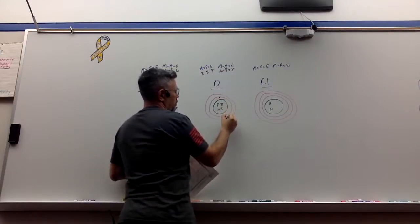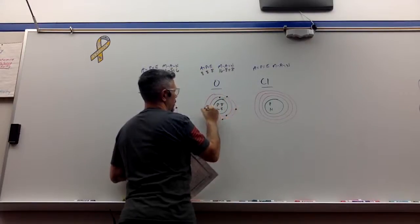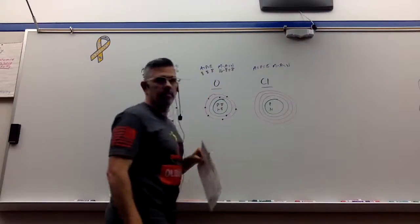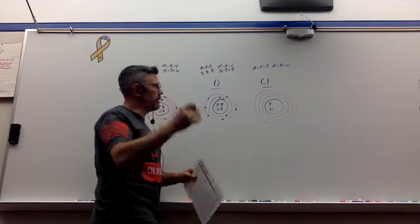Now I need to put eight electrons. One, two, and then one, two, three, four, five, and six. It doesn't really matter where you draw them. I like to balance it out for aesthetics, but you don't need that.